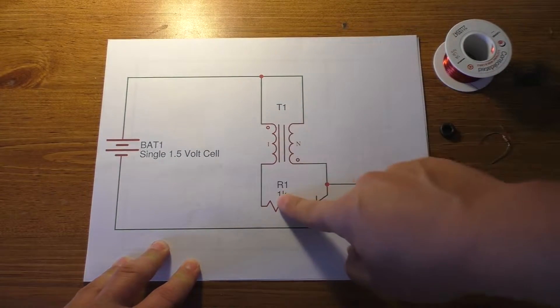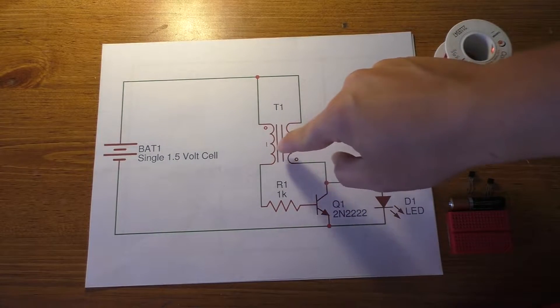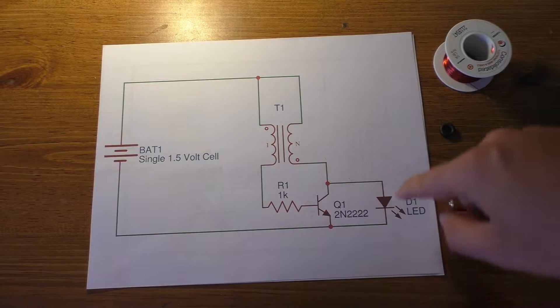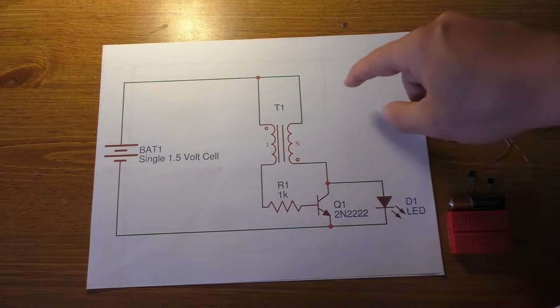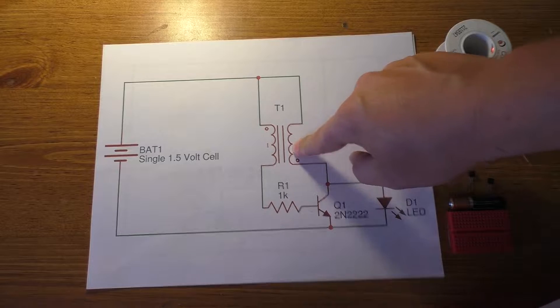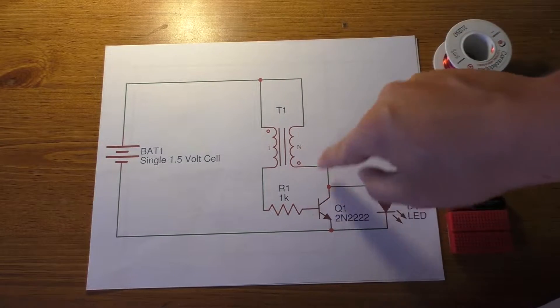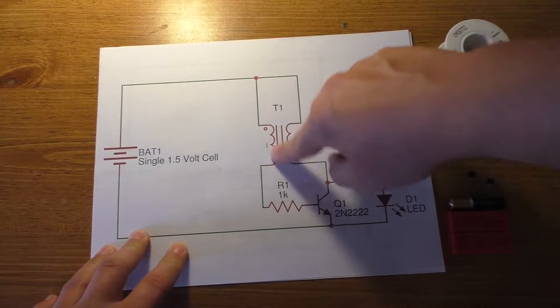You have one side of the transformer going into a 1k resistor and that goes into the base of the transistor here. And then the transistor is simply switching the current on and off, or the current that flows through this winding of that transformer. So this winding ends up just being a feedback loop.